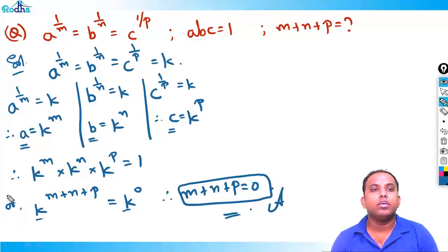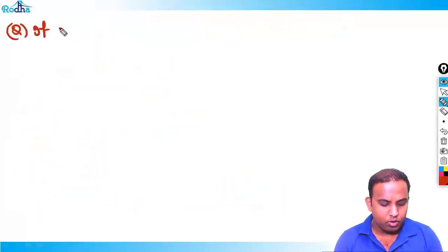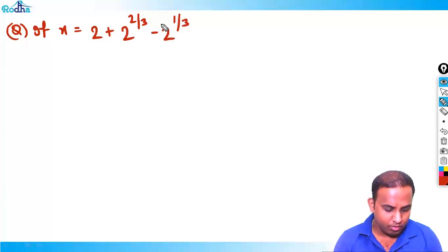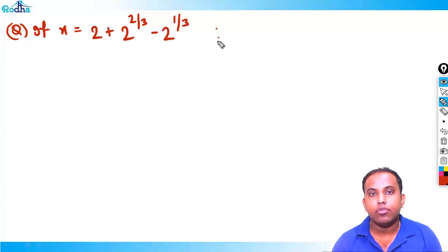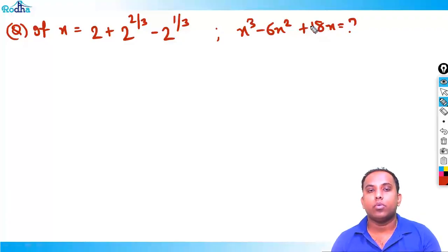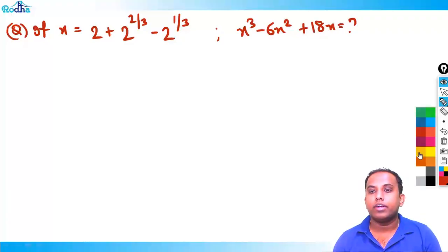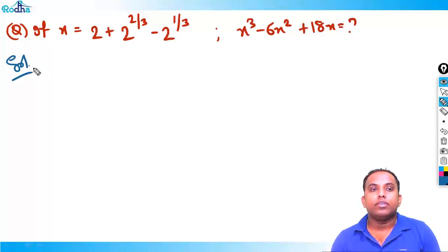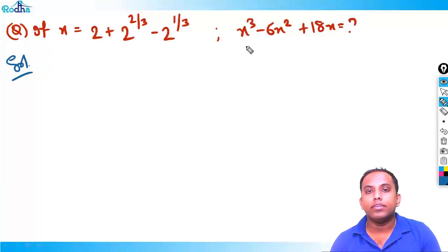I hope that is clear. The next question: if x = 2 + 2^(2/3) - 2^(1/3), find the value of x³ - 6x² + 18x. This is a good advanced algebra question requiring multiple concepts.